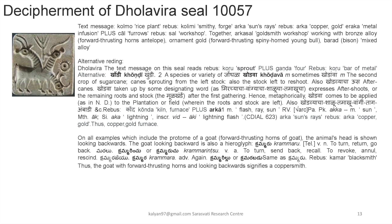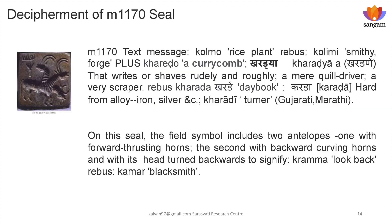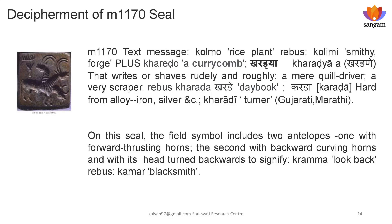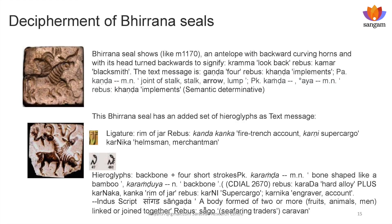The antelope is looking backwards — 'Karamaramu/Karamara' = looking back, rebus 'Kamar' = blacksmith. Another seal shows the rice plant with karado, karikom, and zimbal combined together. 'Kolmo' = rice plant, rebus 'Kolumi' = smithy. 'Karado' is a karikom; 'Karadya' is a karikom; 'Karada' = day book. It also means 'Karada' = hard alloy of iron, silver etc.; 'Karadi' = a turner. So he is indicating a day book of activities of artisans working with alloys of iron, silver. On this seal, the field chamber includes two antelopes: one with a forward thrusting horn, another looking backwards with curving horn, to signify 'Karamara' = look back, rebus 'Kamar' = blacksmith.